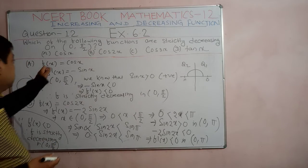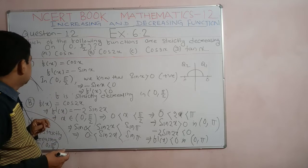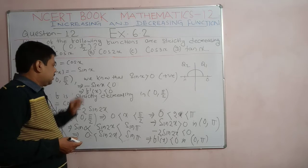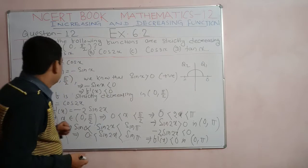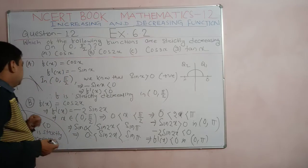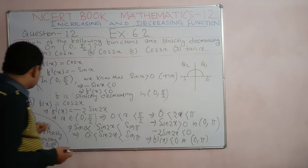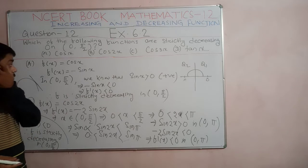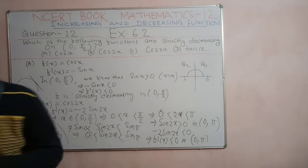So we saw that for the first case, f(x) = cos x is strictly decreasing in the interval 0 to π/2, and similarly the second function f(x) = cos 2x is also strictly decreasing in the interval 0 to π/2. Let us now see the third function.